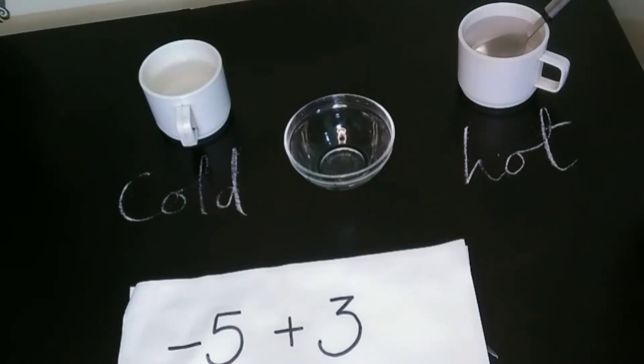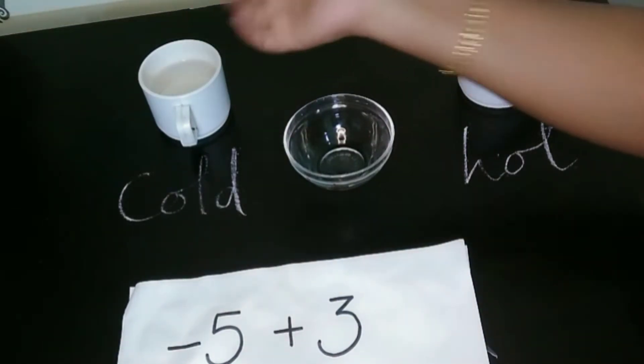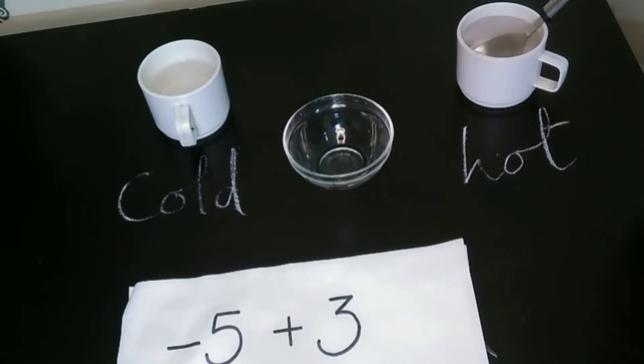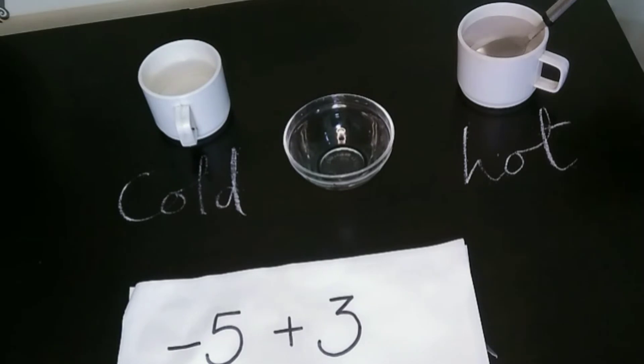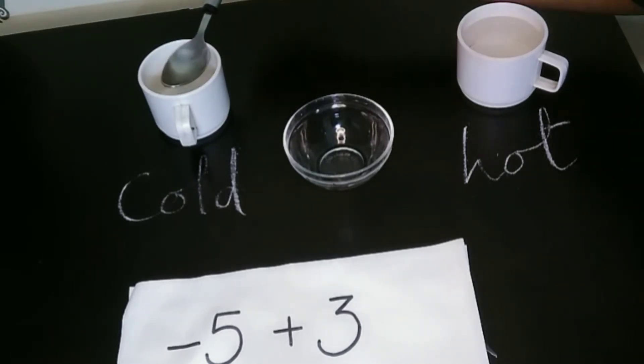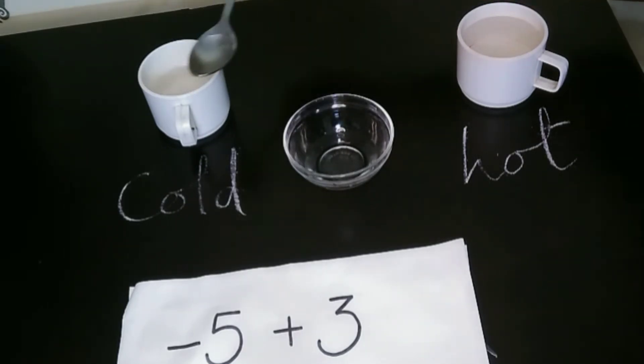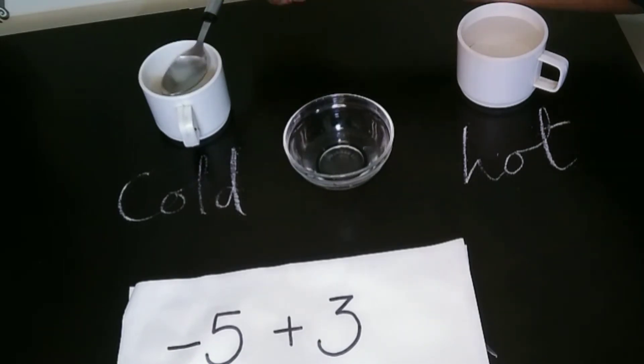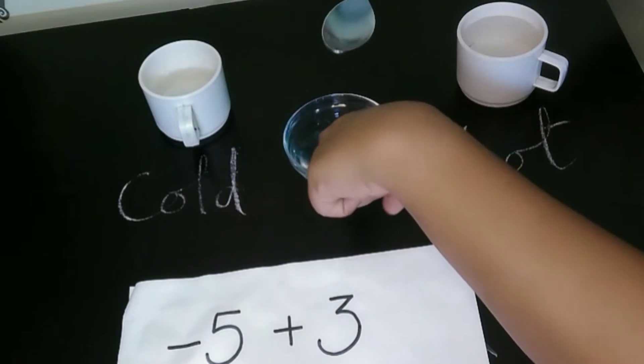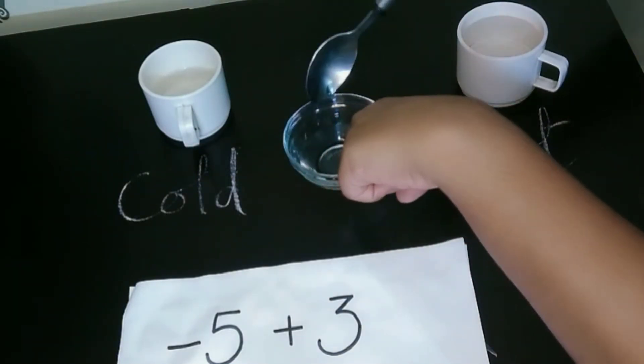The question is -5 + 3. The cold water represents negative numbers and the hot water represents positive numbers. Here I am putting 5 spoons of cold water. All of you try to do this experiment at home. Let's touch and see. Yes, this water is very cold.